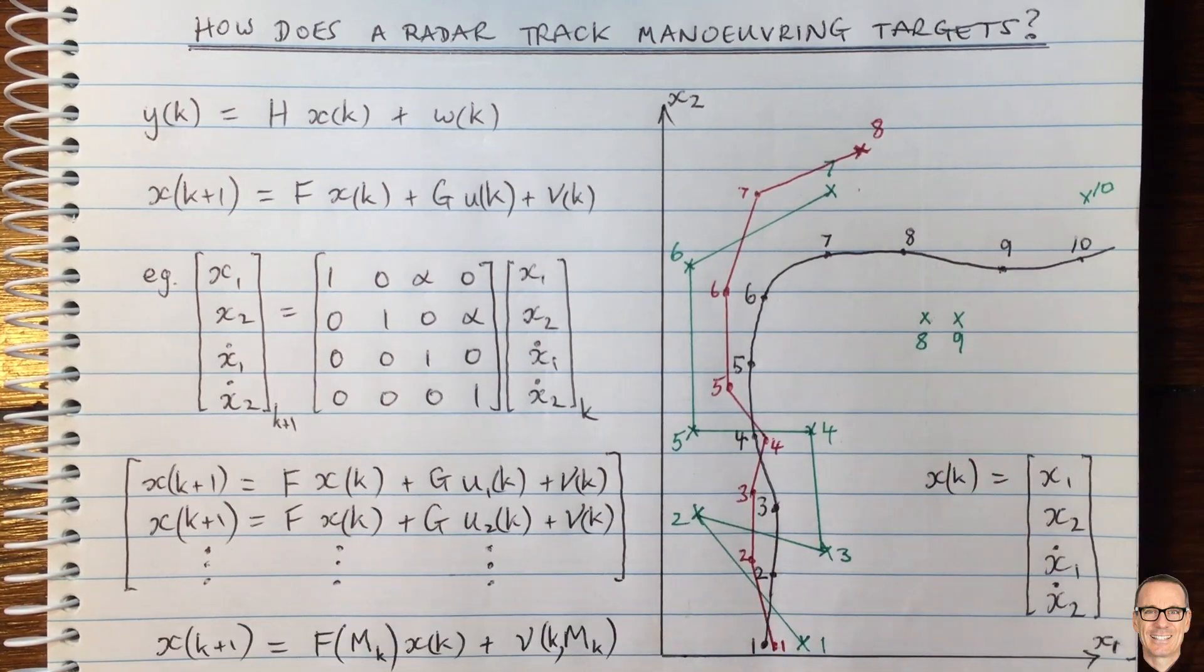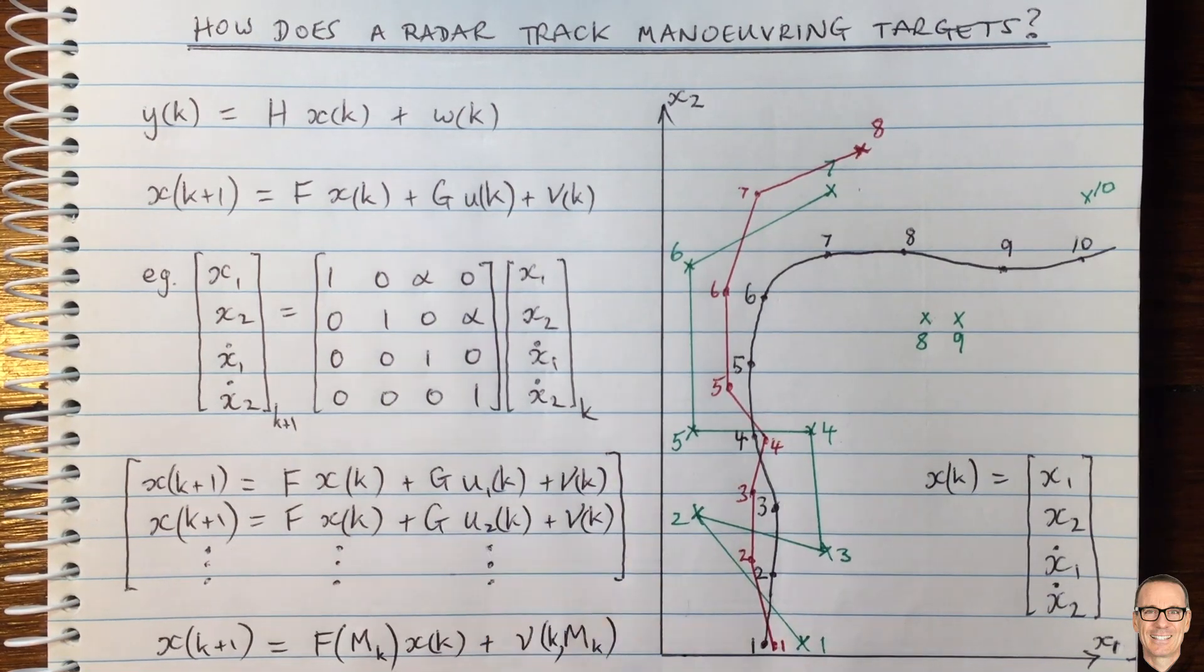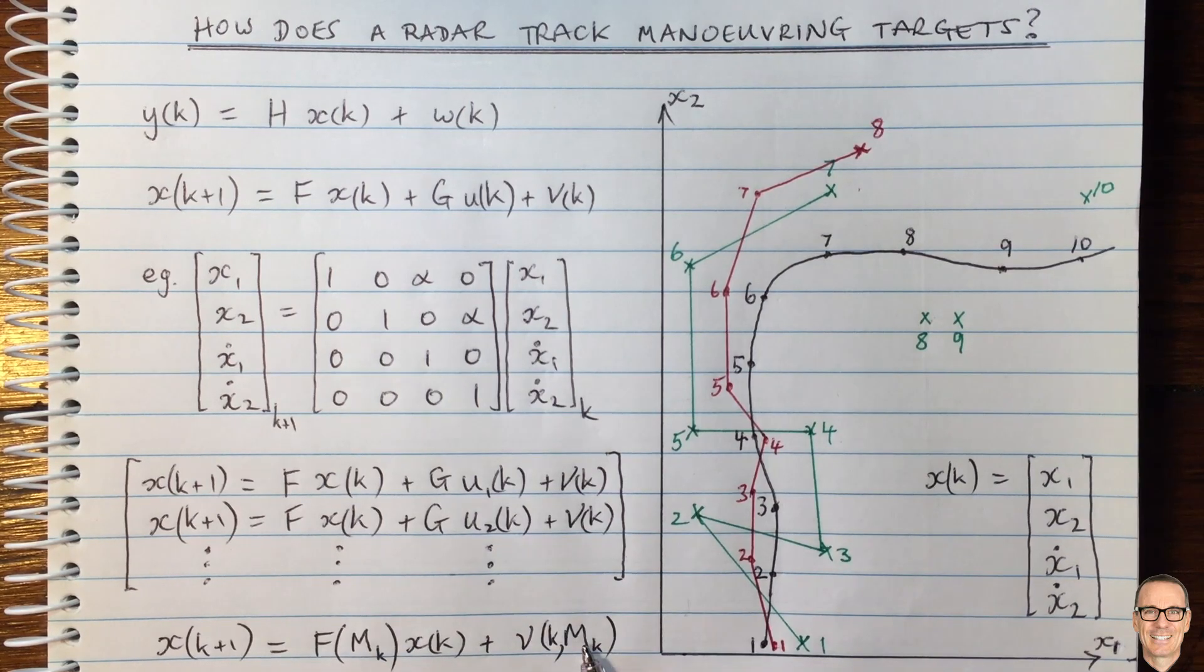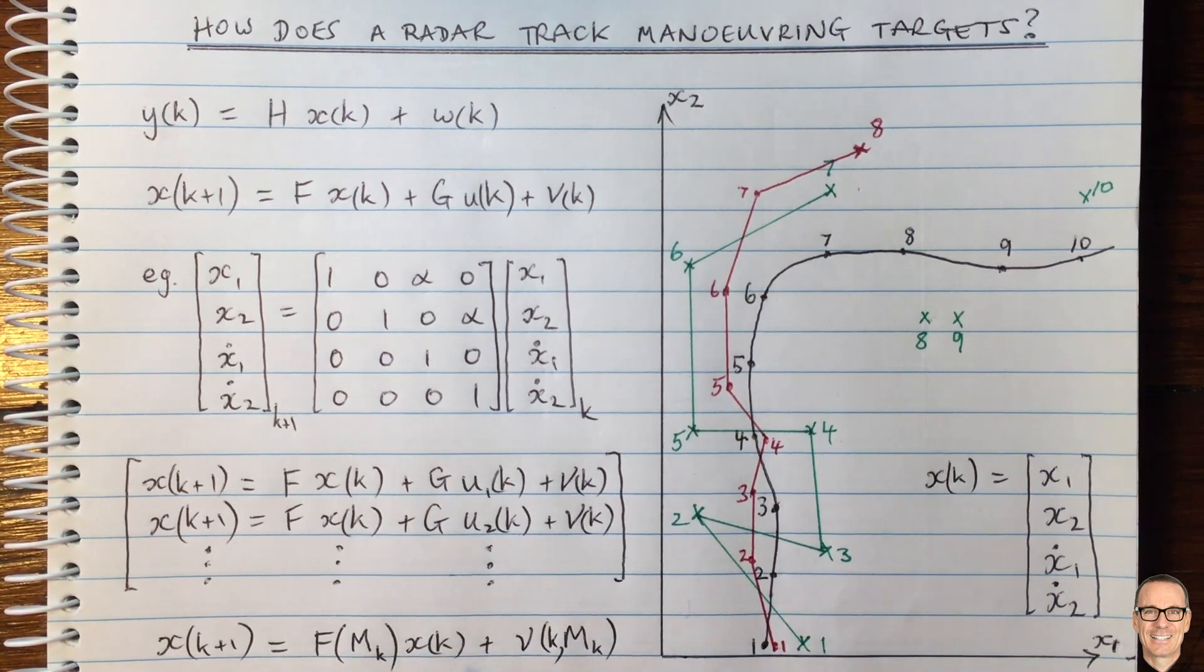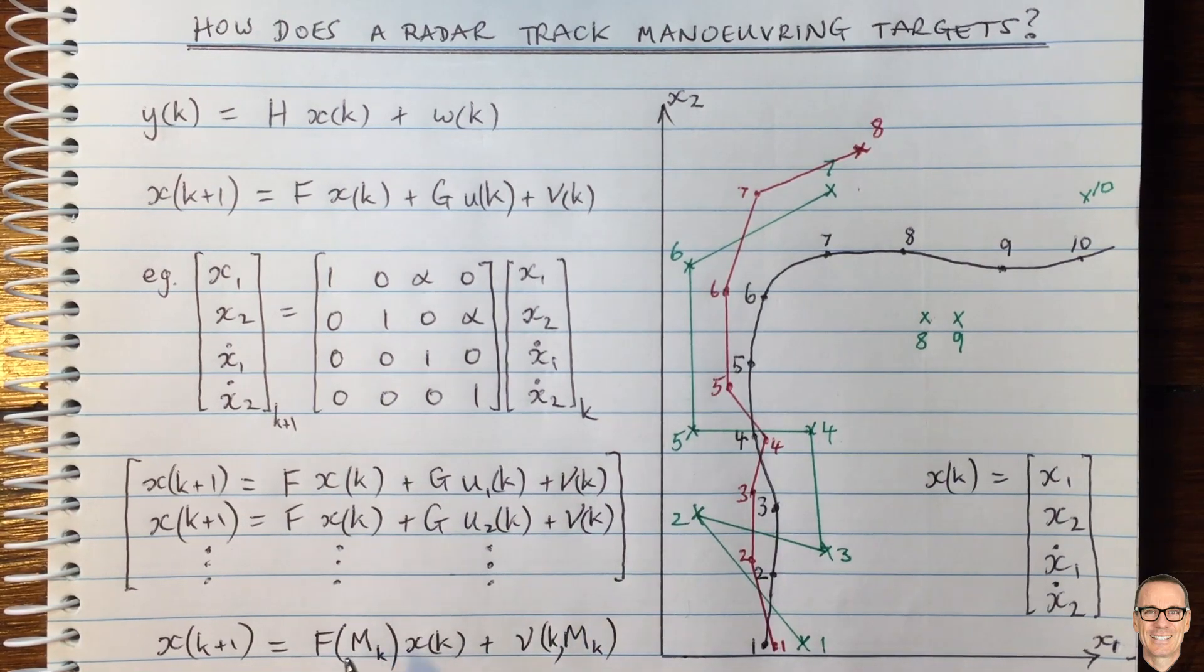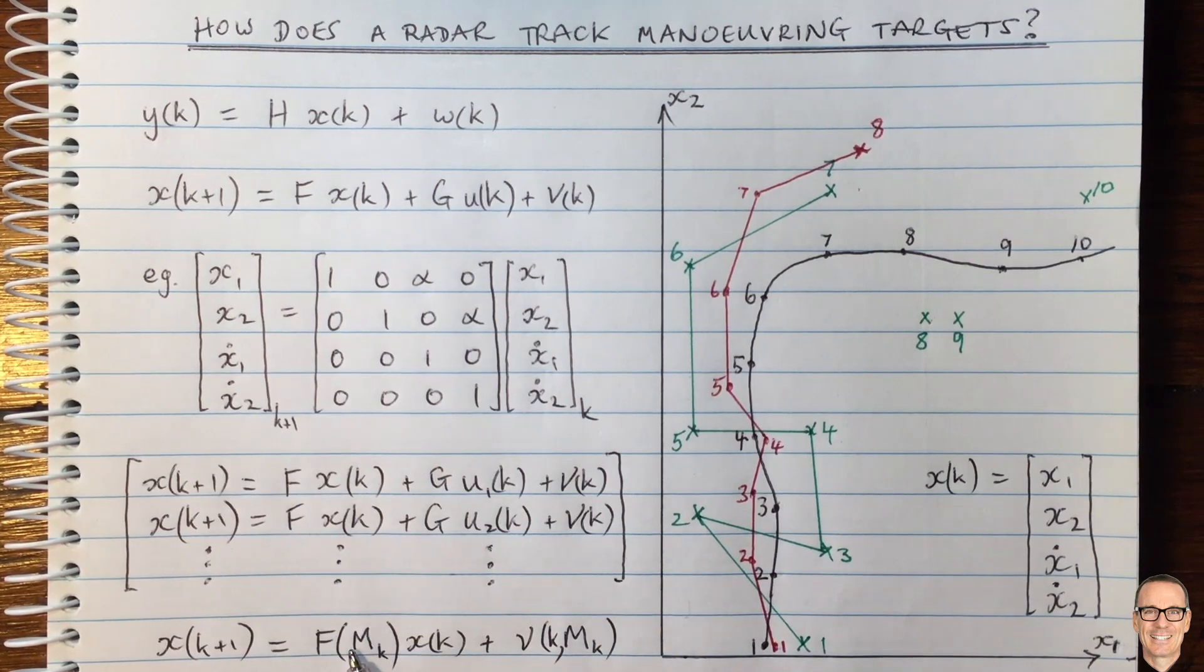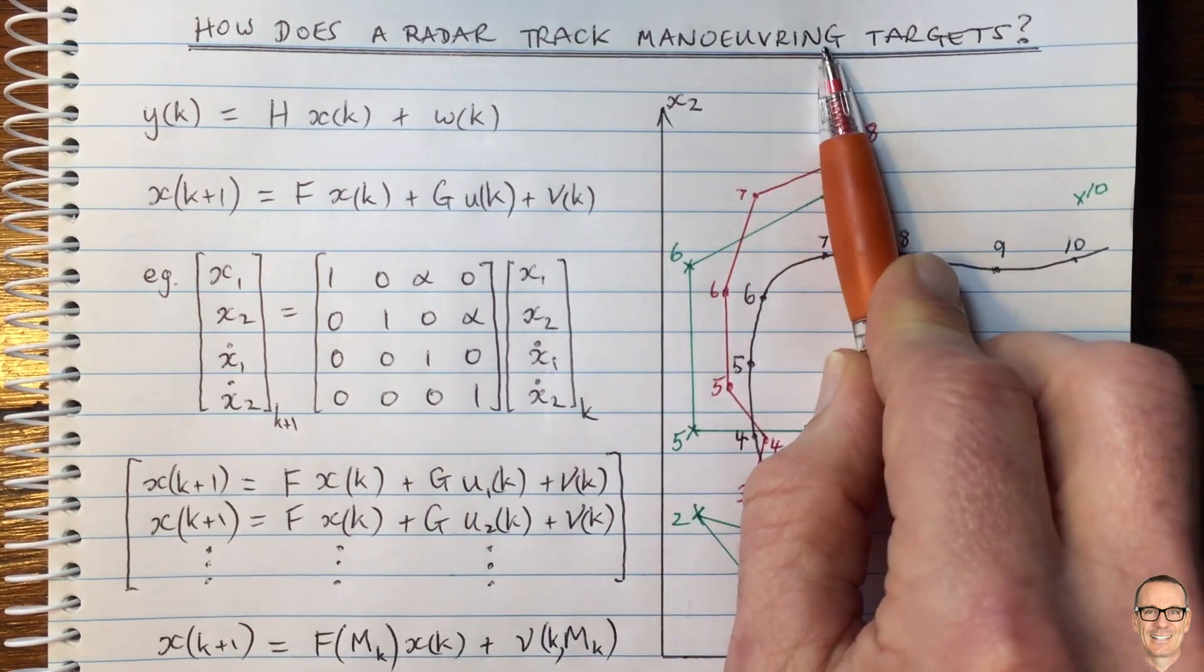A third approach would be to actually model the entire system without the maneuvers, but where there's an underlying Markov state. And that Markov state determines the maneuvering characteristic. So in this approach, you don't include the maneuver explicitly, but you estimate an underlying Markov chain and you re-estimate the F matrix and the variance of the noise. So this is a third approach to handling maneuvering targets.